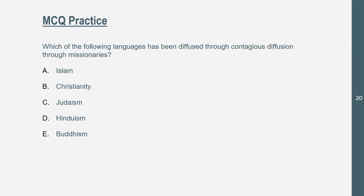Practice question: Which of the following religions has been diffused through contagious diffusion through missionaries? The correct answer is Christianity. Islam didn't spread much through missionaries. Judaism has gone mainly through relocation diffusion, not much contagious diffusion. Hinduism, also an ethnic religion, didn't spread primarily through missionaries. Buddhism spread through contagious diffusion via teachings rather than missionaries specifically. This is a tough question — you'll likely see something a little easier on the AP test.